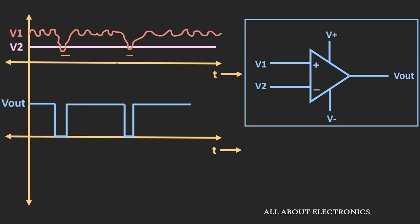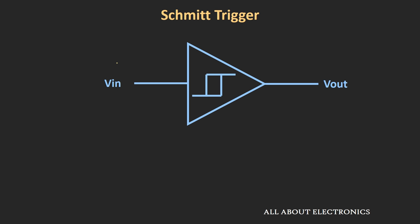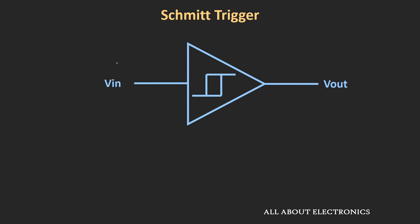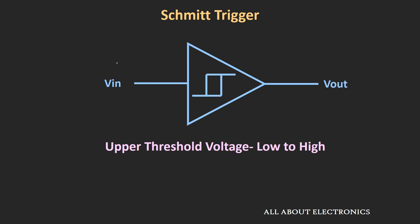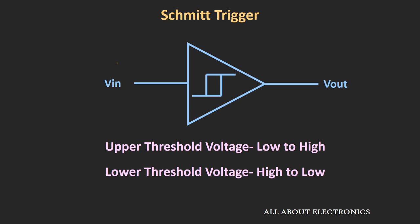So we can say that this comparator is not immune to noise, and because of that it can affect your output. Now this kind of problem can be avoided by using the Schmitt trigger. This Schmitt trigger is nothing but the comparator with hysteresis. It means that this Schmitt trigger has two threshold voltages: one is the upper threshold voltage for low-to-high transition, and the second is the lower threshold voltage for high-to-low transition. And this is the symbol of a Schmitt trigger.